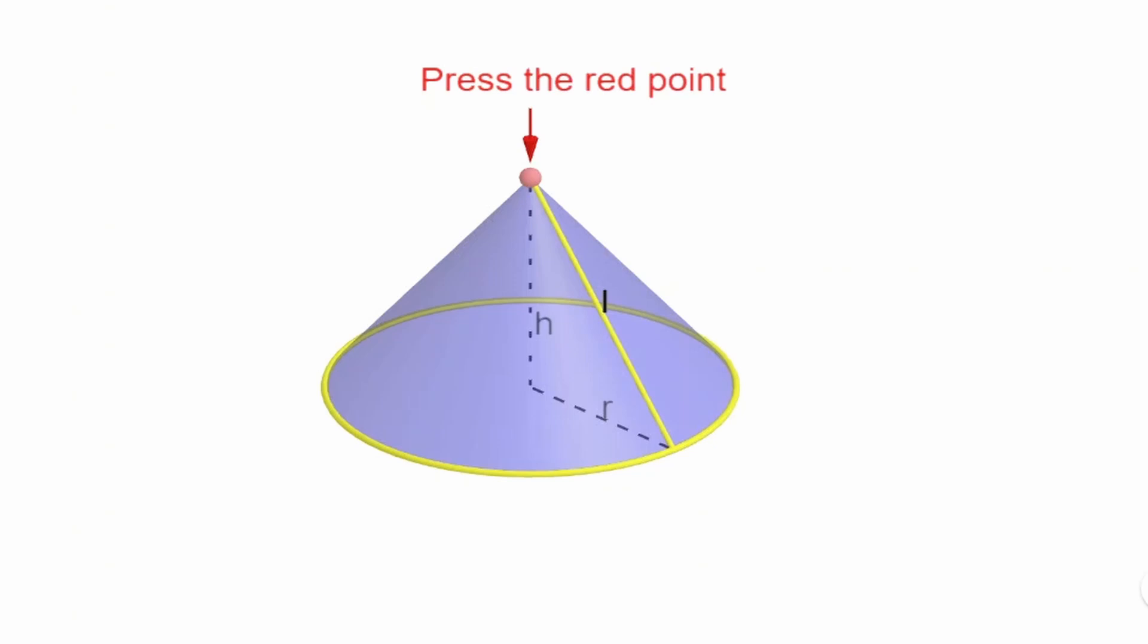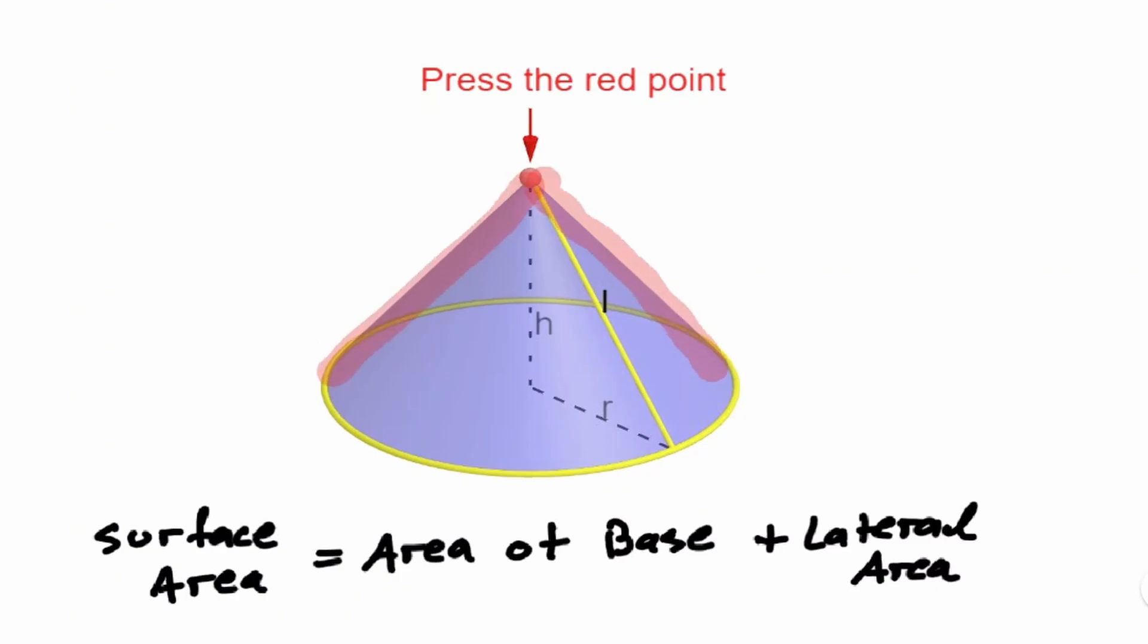Notice that the cone can be broken down into two sections: the base, which is a circle, and the upper area, which is what gives it the cone shape. If we configure both of those areas and then add them up, we should be able to find the surface area of a cone. I'm going to define this area as the lateral area of a cone, the area that is on top of the circular base.